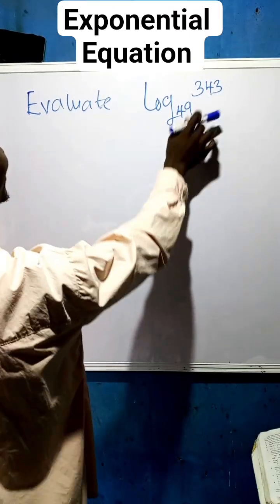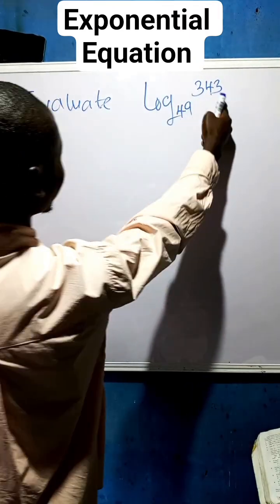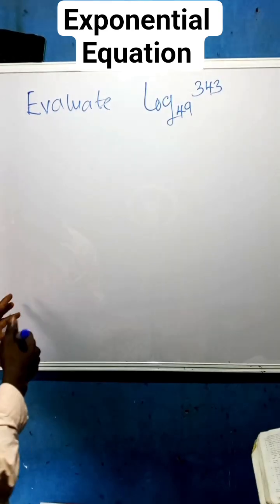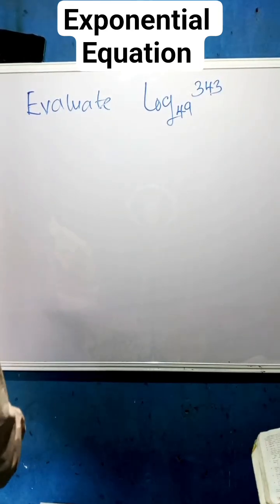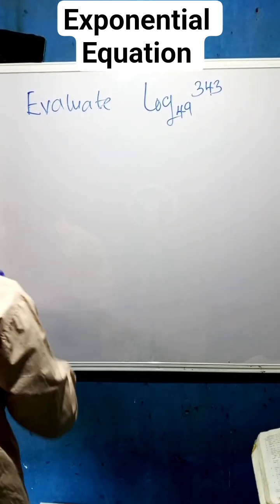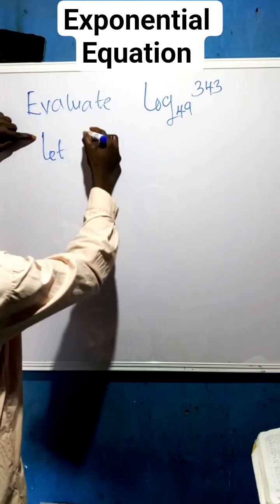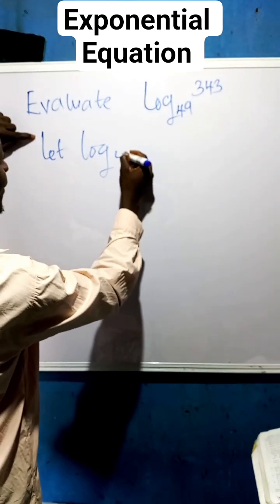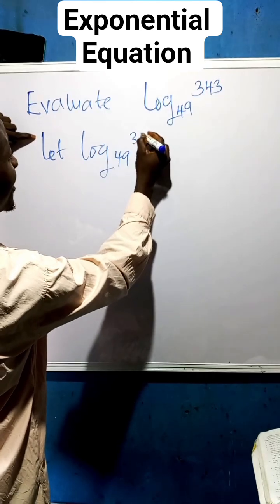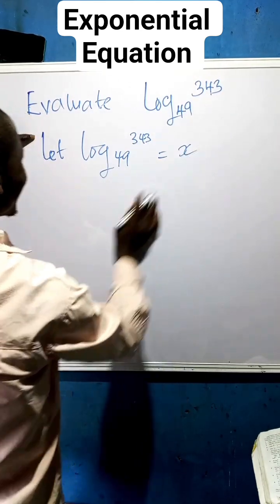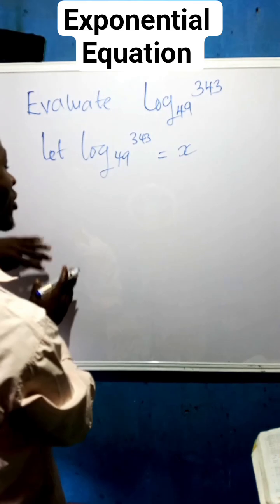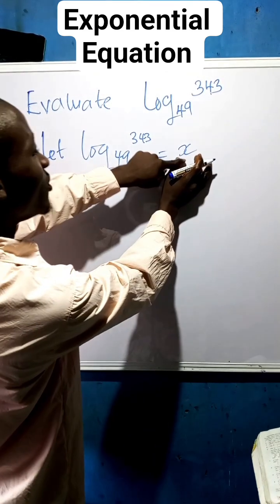Evaluate log base 49 of 343. This question looks hard, but we are going to get this solved as soon as we load this video to the end. Now first, we are going to say let log base 49 of 343 equals x.